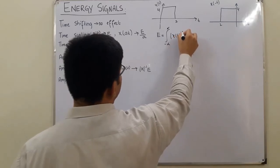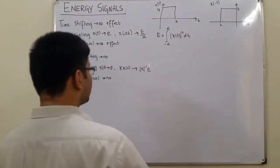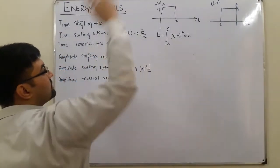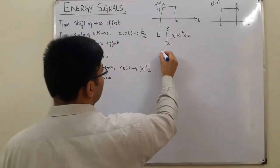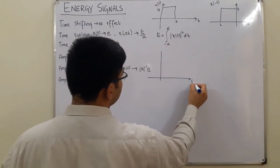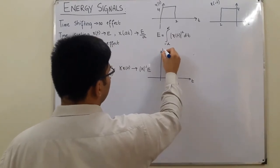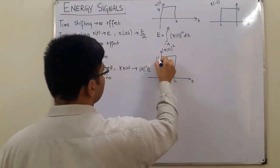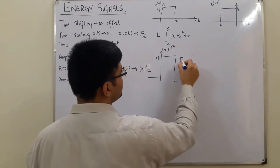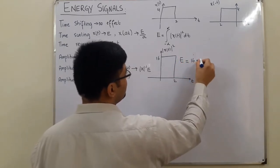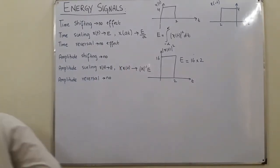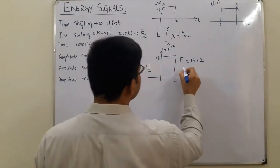If I draw the graph for |x(t)|², the amplitude is 4, so 4² = 16. The graph goes to 16 from 0 to 2. So the energy of the original signal is 16 × 2 = 32. Yes, 32 joules is the original energy.